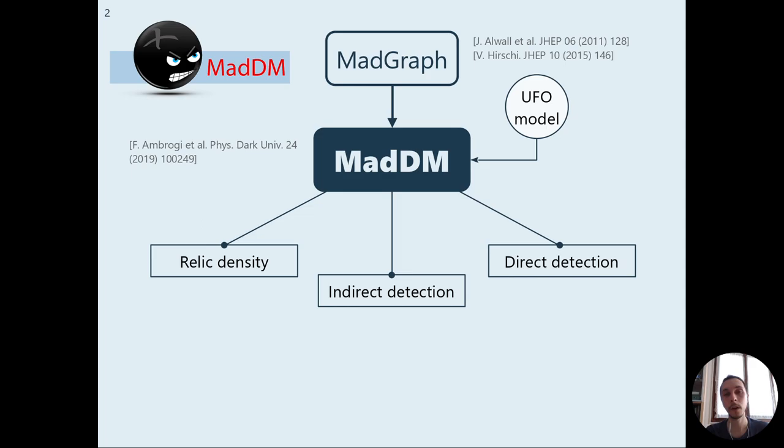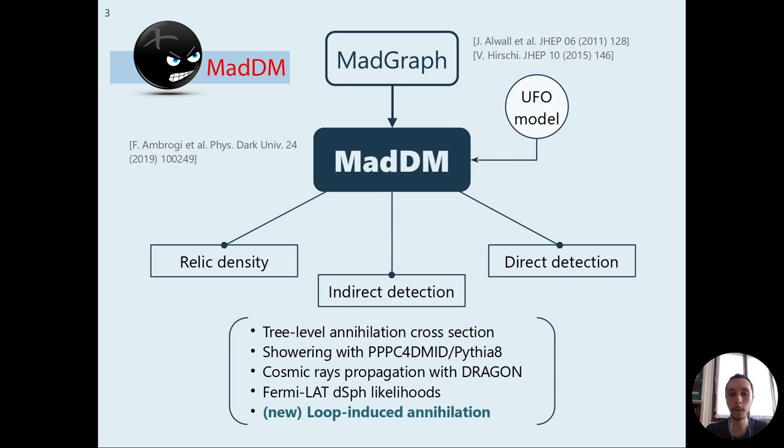First of all, MadDM is a numerical tool plugin of MadGraph, which is able to compute different dark matter observables for generic dark matter models which should be provided in the UFO format. It is made of three different modules for Relic Density, Direct Detection and Indirect Detection, which would be the main focus of this work, as in the new update we've added the possibility to compute loop-induced annihilation.